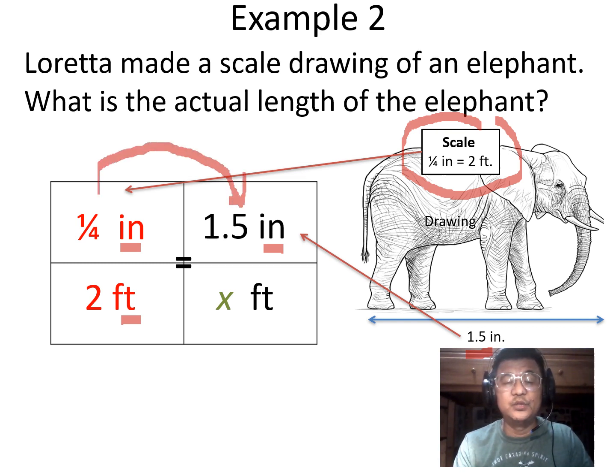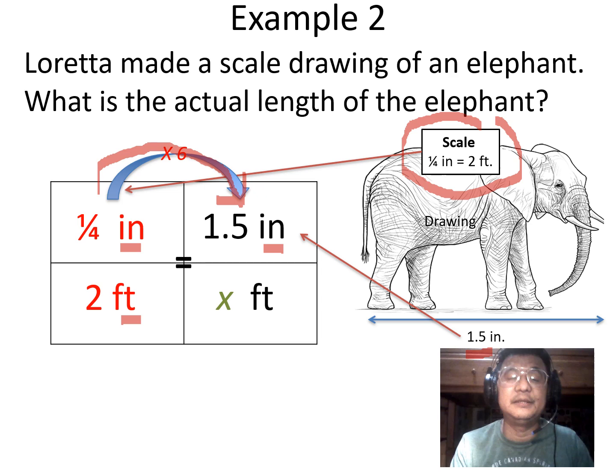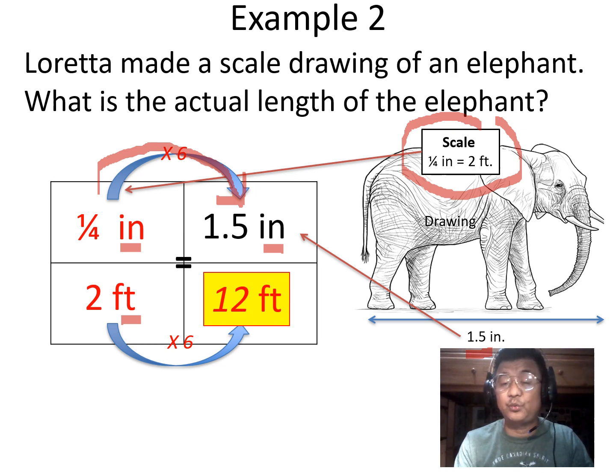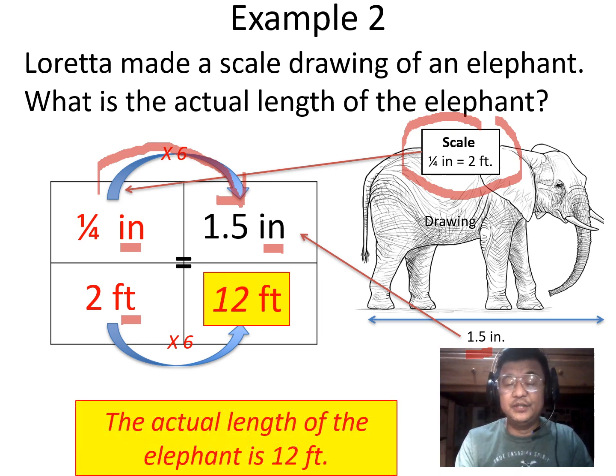How many 1/4ths will make 1.5? Okay, so the pattern is times 6. So the bottom, we also do times 6. Therefore, 2 times 6 is 12 feet. Therefore, in real life, the actual length of the elephant is 12 feet. Again, it follows a proportion. See that? Times 6 below, times 6 on top.